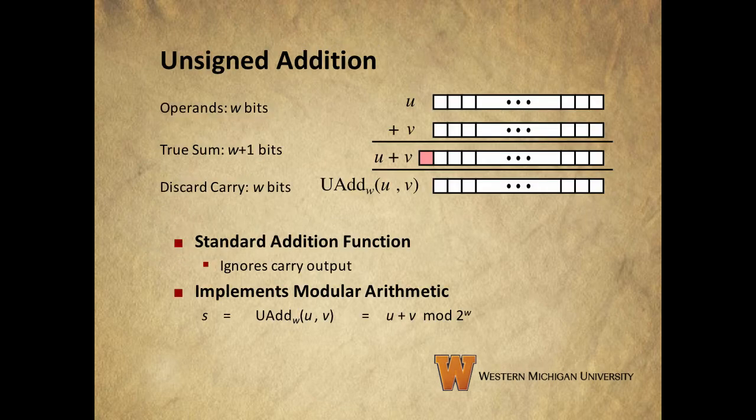With unsigned addition, we just add our integers and discard the carry bits. The standard addition function performs modular arithmetic. This is a lot like performing an addition and then truncating the carry bits. Remember that we talked about how truncation basically performs a mod operation in section 2.2. This works in the same way. If we drop the w highest order bits from our result, it has the effect of performing a mod 2 to the w on the result.